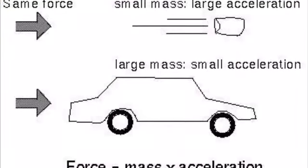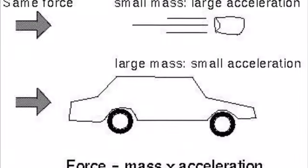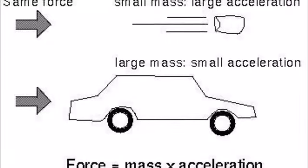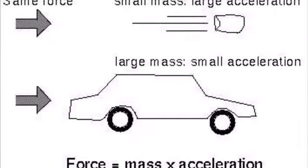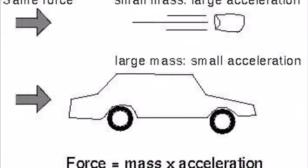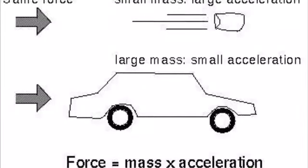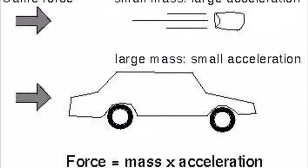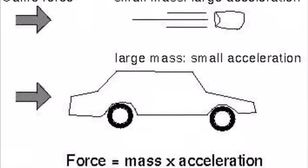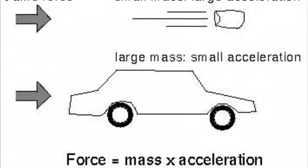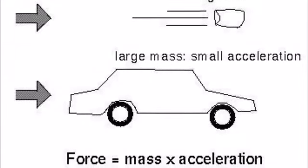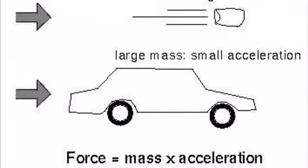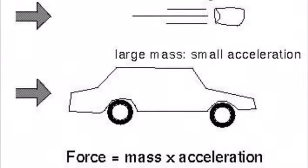Now onto the second law. This law states that an object with less mass or more force gets more acceleration. The formula used for Newton's second law is force is equal to mass times acceleration.